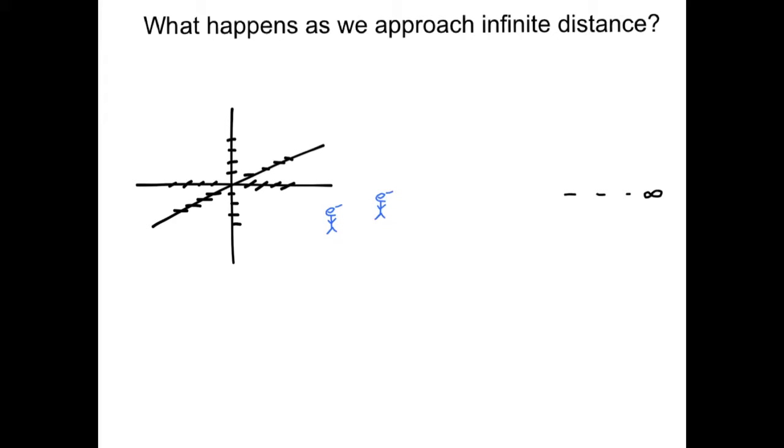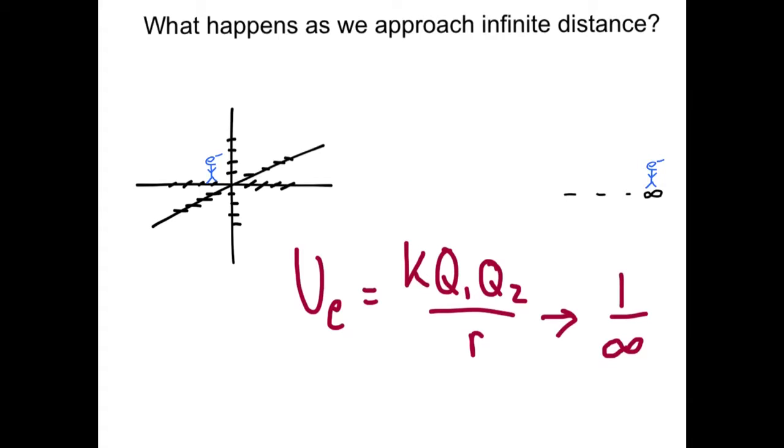For one final example, let's consider what happens when we approach infinity. Certainly these two charges don't want to hang out with each other. They're going to push each other as far away as possible. And as they get further and further away, we already know about the 1 over r squared rule for their field and for their force, but what happens to energy? As r goes to infinity, the potential energy term turns into zero.